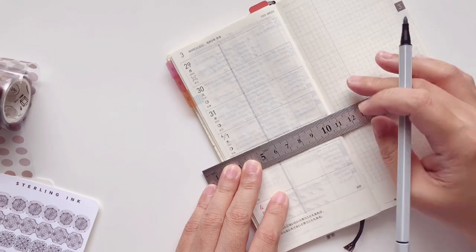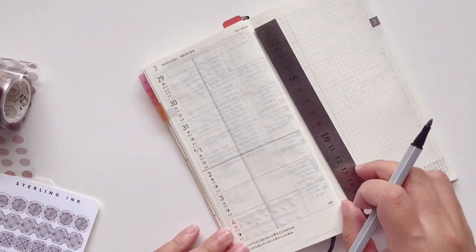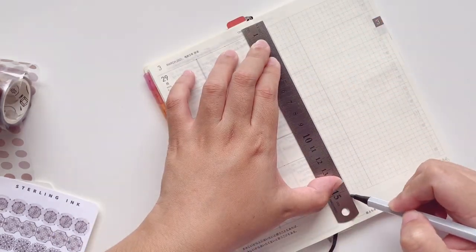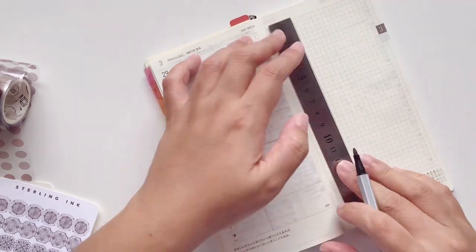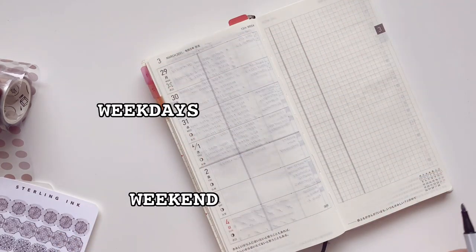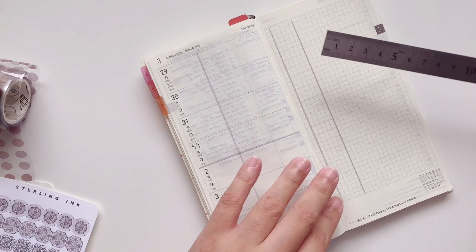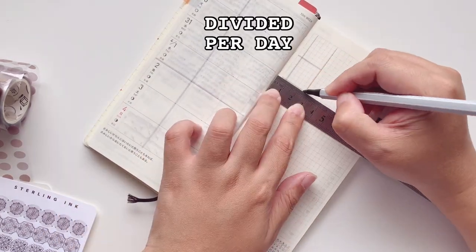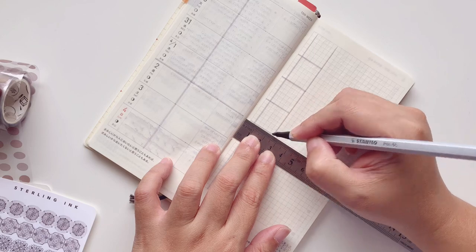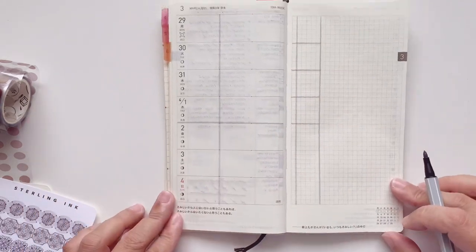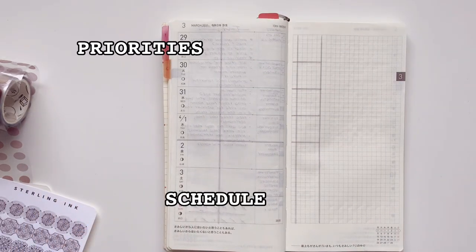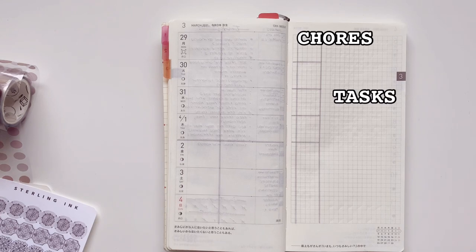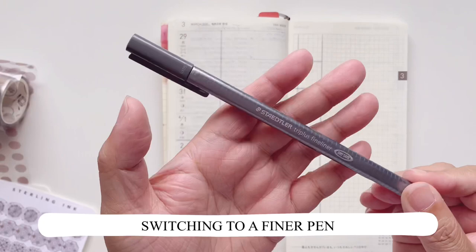So it is going to be a little different from what I have shown you before which is why I decided to make this video for you. So here I decided to deepen the lines like I always do and I only divide it per day on the right side of the page. So this is divided between four sections and you'll see more of that later.